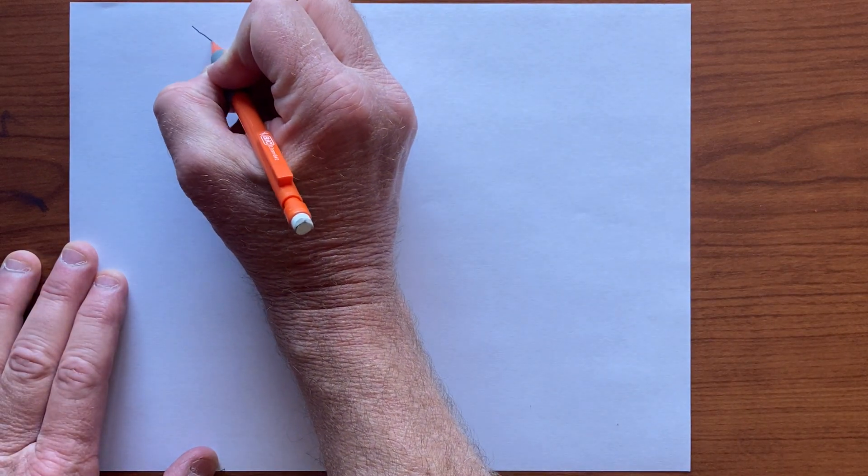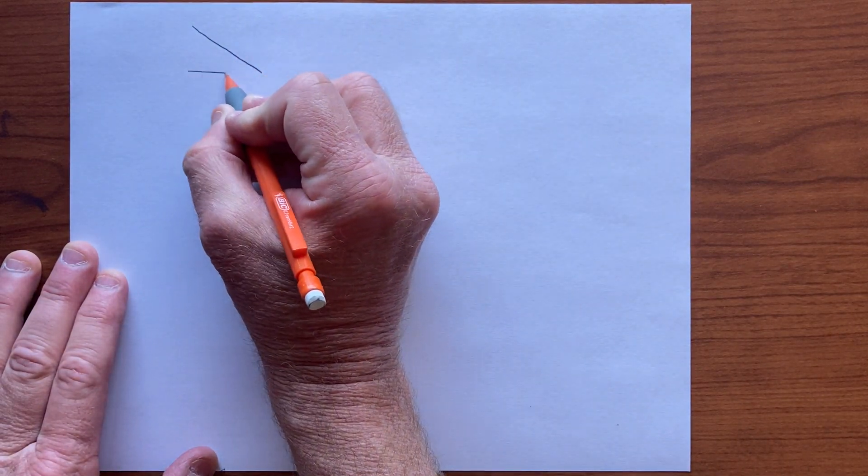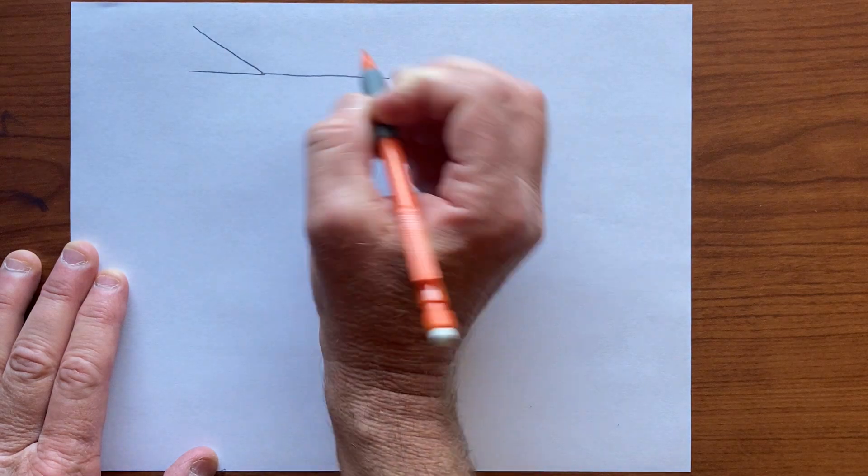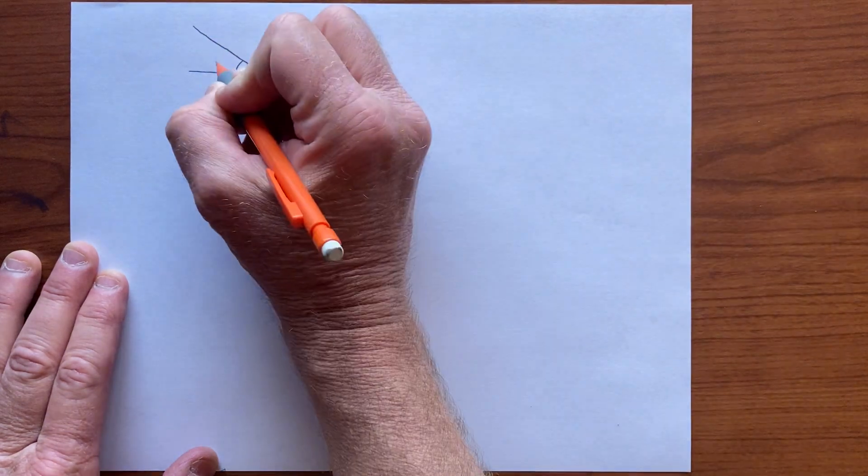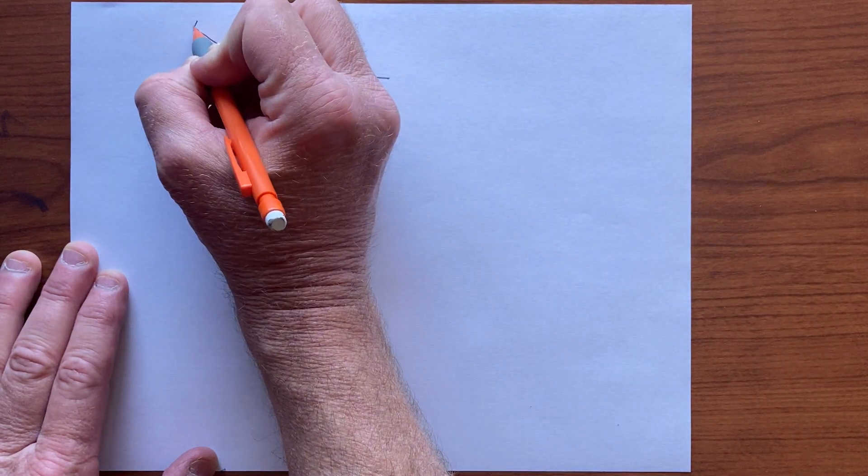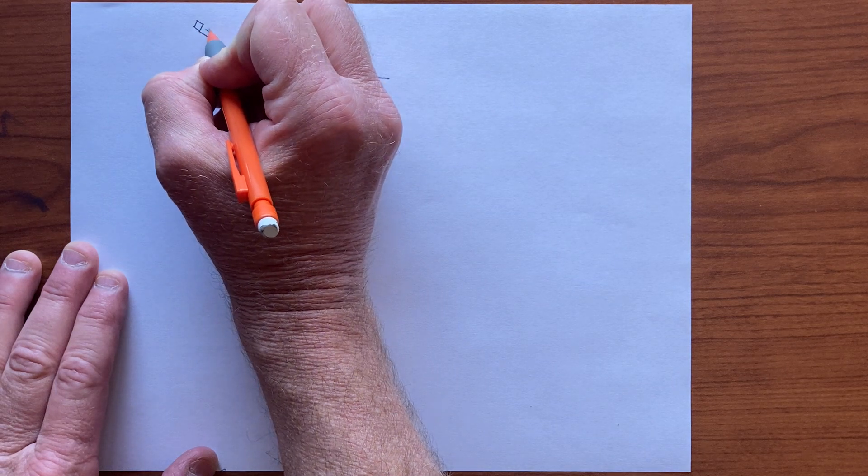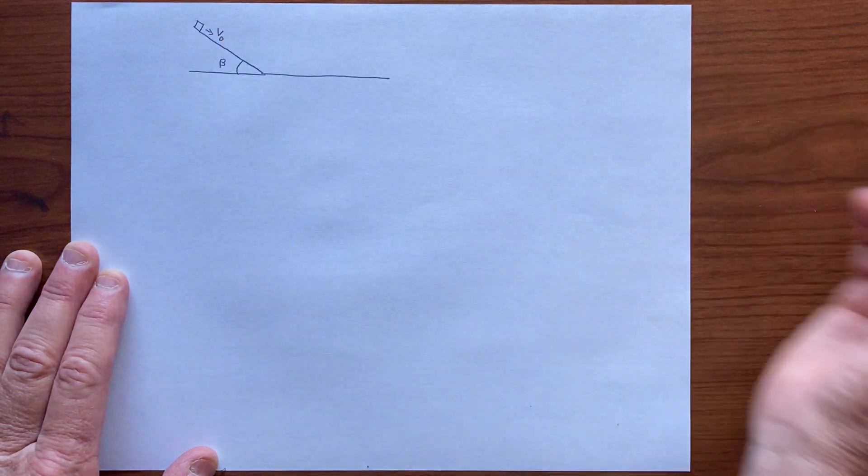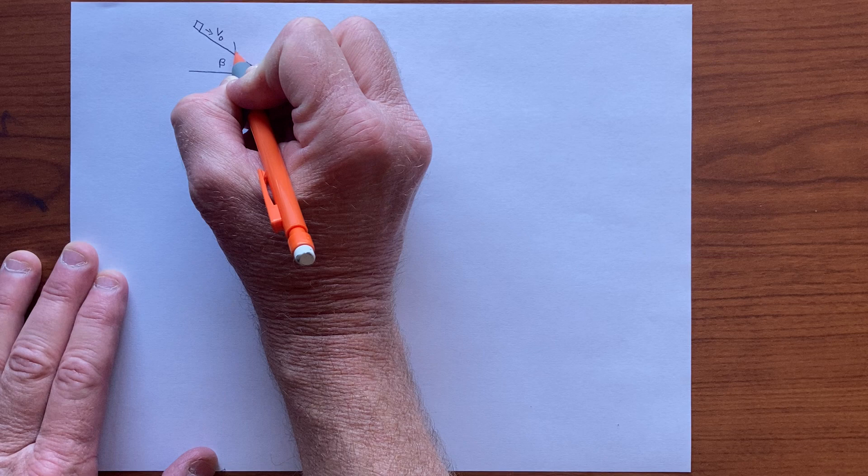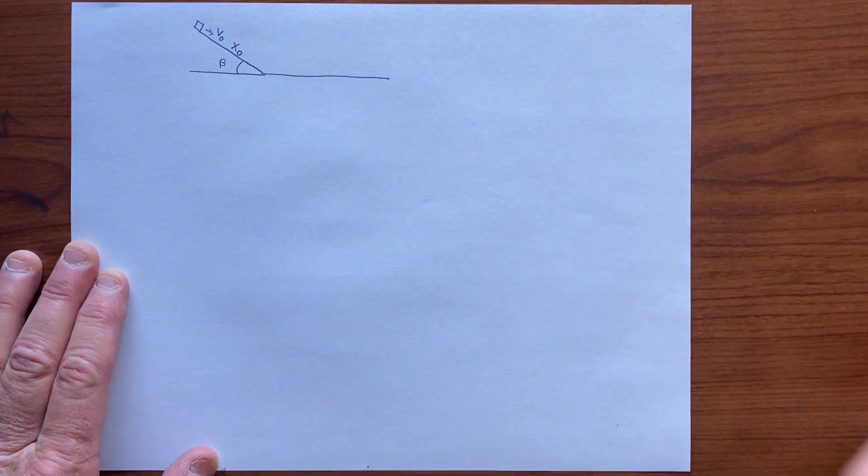So let's imagine that we have an inclined plane of angle beta, and we have an object that we launch downwards at speed v-naught. Let's say that the distance along the inclined plane is x-naught.